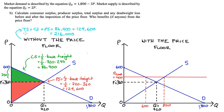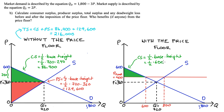That's the welfare picture before the price floor. Now let's look at what happens when we introduce the floor at $400. At this price, quantity supplied is 800 but quantity demanded is only 600, so only 600 units are actually traded. Consumer surplus is now: CS = ½ × 600 × (600 − 400) = ½ × 600 × 200 = 60,000.